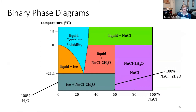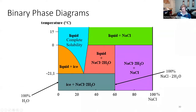Binary phase diagrams like Dr. Brush talked about — here's an example of salt, sodium chloride, dissolving in water. This is a more typical phase diagram where we're not too concerned about pressure. We have temperature on the y-axis. On the x-axis is the percentage — usually weight percent, but could be atomic percent or mole percent — of the component added to the left component. On the left-hand side we have 100% water, and on the right-hand side, 100% sodium chloride, just solid salt.